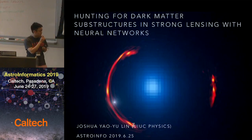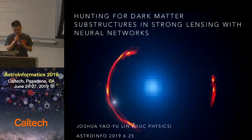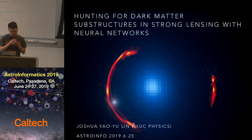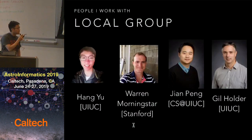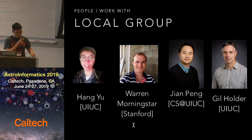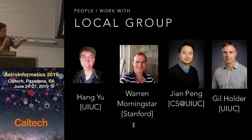Good morning, everyone. I'm Joshua from University of Illinois at Urbana-Champaign. I'm going to talk about my work using neural networks to hunt for dark matter substructures in strong gravitational lensing. These are my collaborators: Henry is an undergraduate working with me, and Warren is a graduate student at Stanford. Chen Pong is a professor from computer science, and my advisor is Gail Hodor.